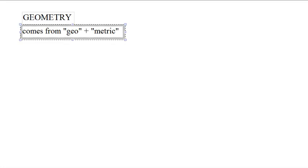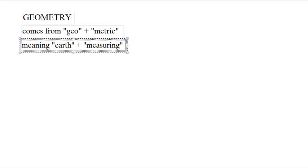The next section is on geometry. The word geometry breaks down into geo and metry, or geo and metric. The word geo means earth, and a metric is a measurement. So, earth measuring.